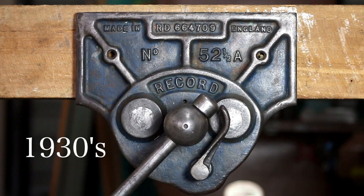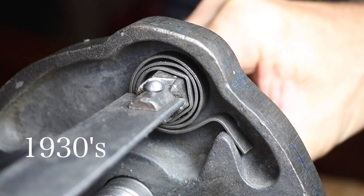In the 1930s version, introduced approximately in 1932-1933, the registered design number is retained, we have a Made in England stamp, and we have the addition of a faceplate nubbin. This was incorporated into the cast to provide extra room for the new quick-release spring mechanism.